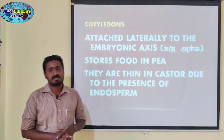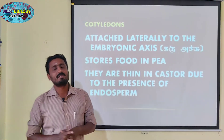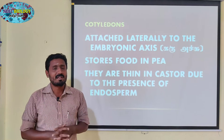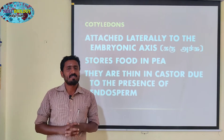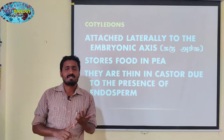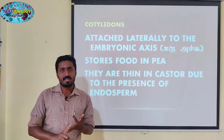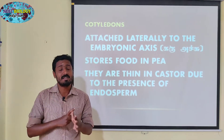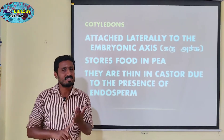Next are the cotyledons. What are the types of seeds? In the seed, there are funicle, hilum, micropyle, seed coat — the testa and the tegmen — two types of seed coat layers.